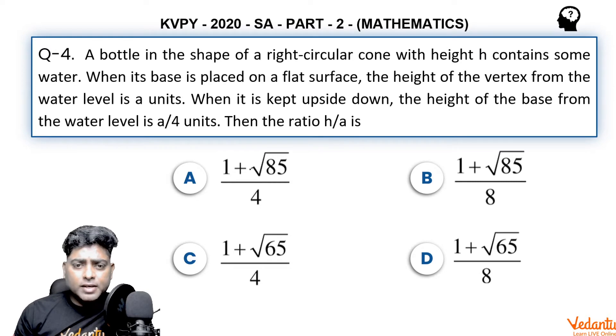The options for h by a are 1 plus root 85 by 4, 1 plus root 85 by 8, 1 plus root 65 by 4, and 1 plus root 65 by 8.